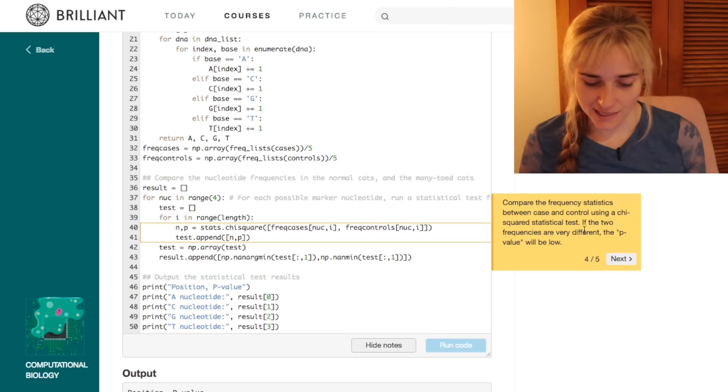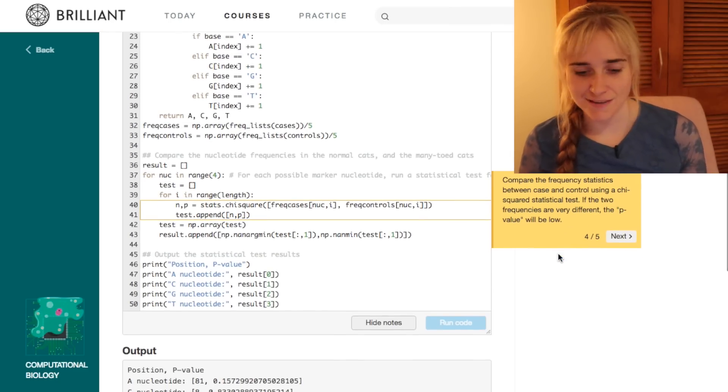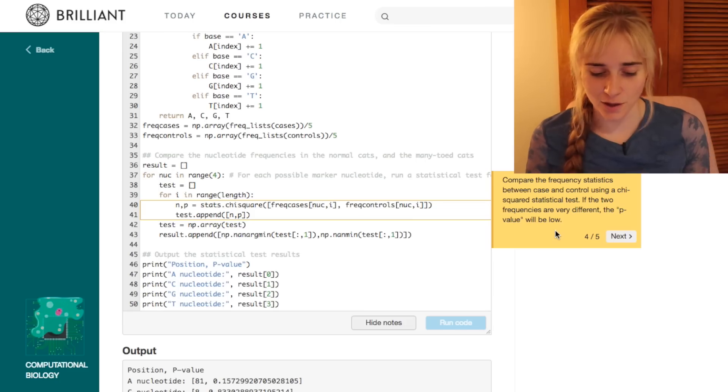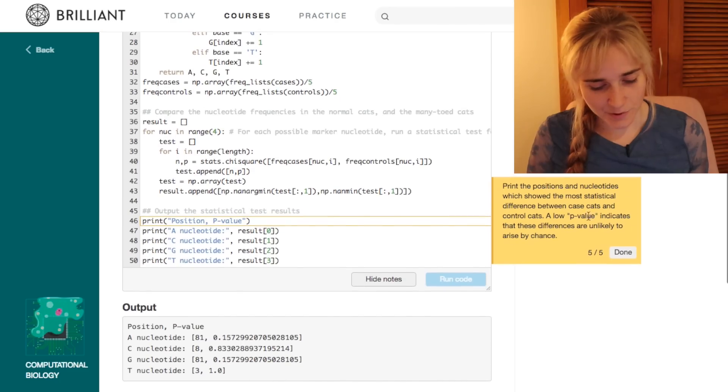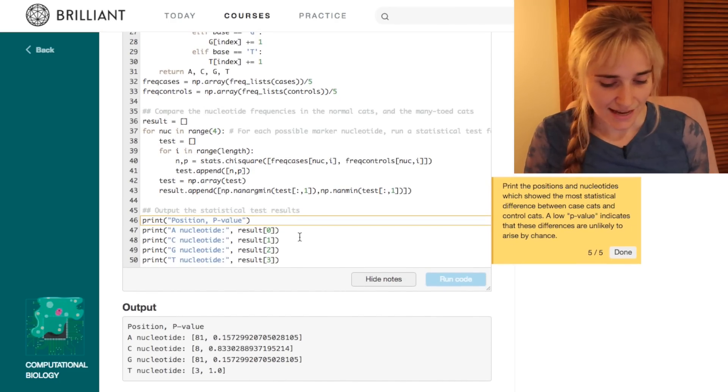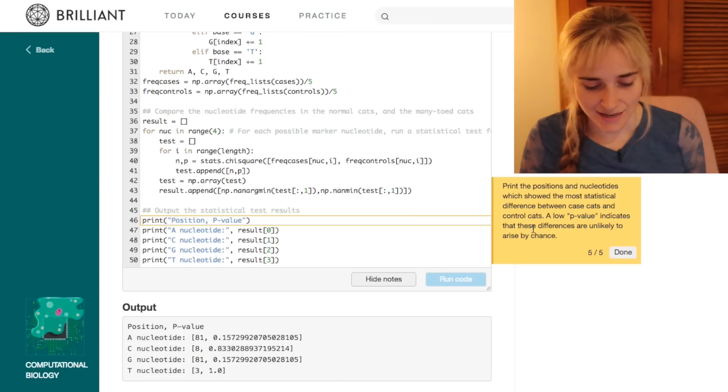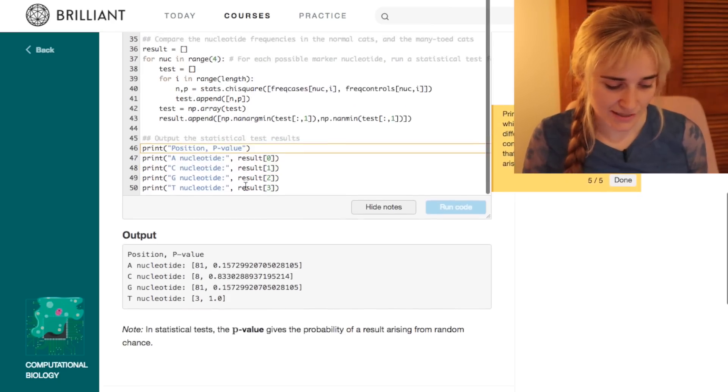Yep, as well as using chi-squared, we're also looking at the p-values. We want your p-value to be low. Kind of indicates that what you've seen is not just due to random chance. Then at the end, we're just printing the positions and the nucleotides which showed the most statistical difference between the case cats and the control cats, and we're printing the p-value.